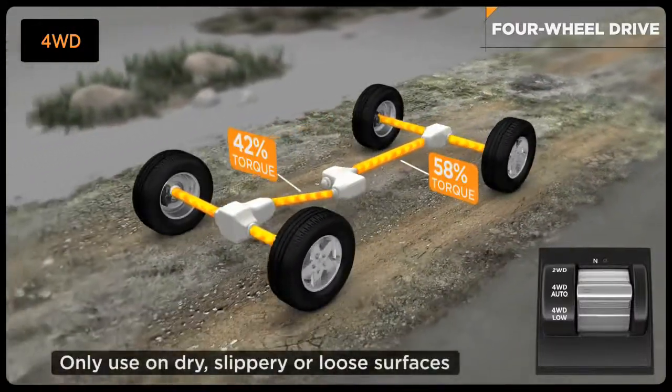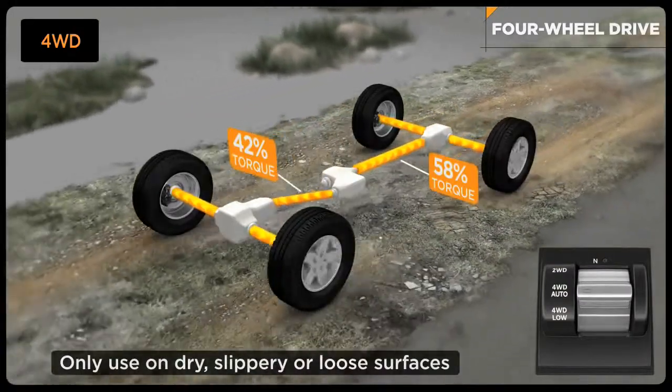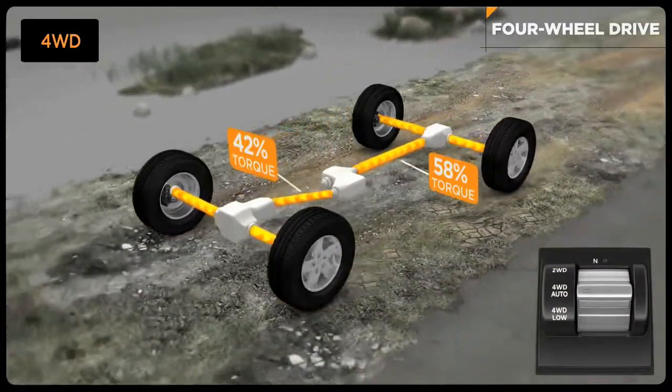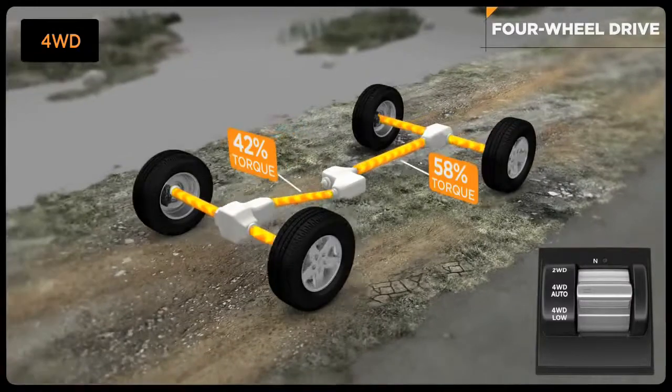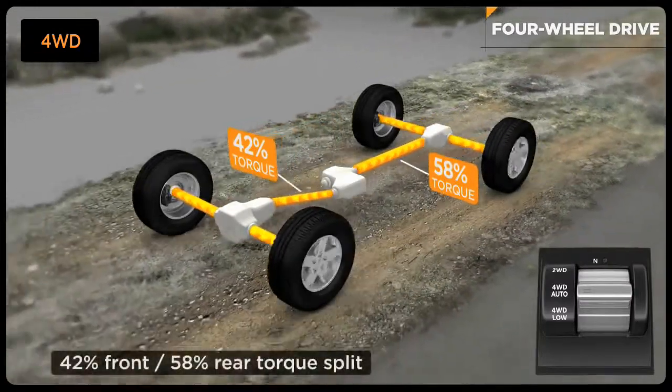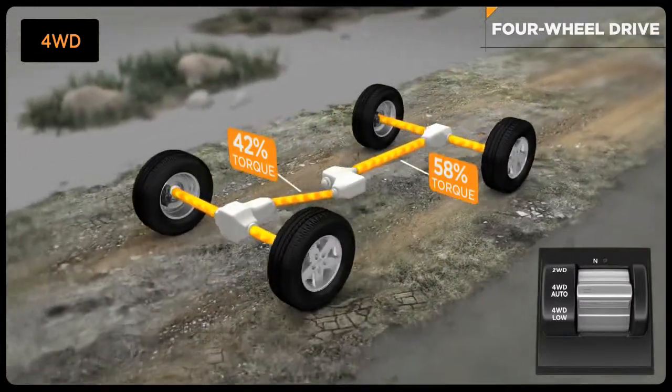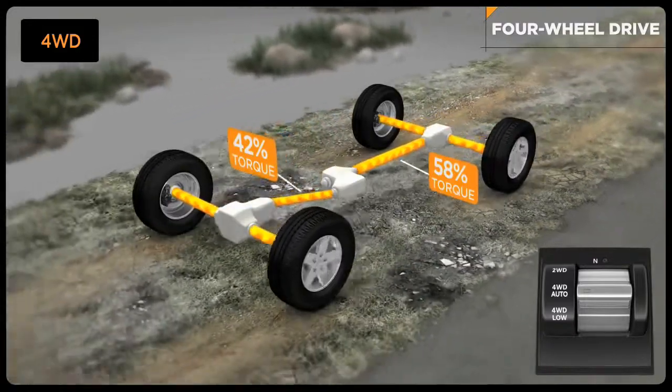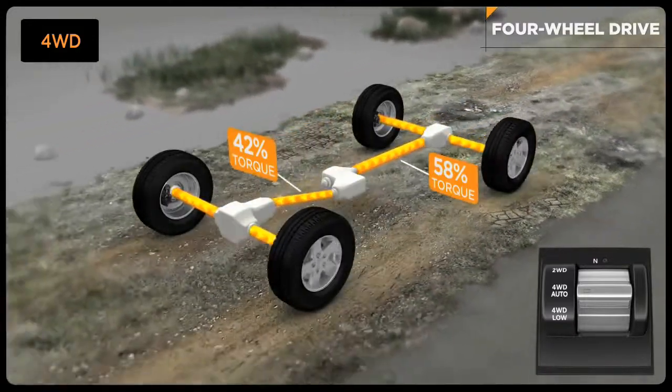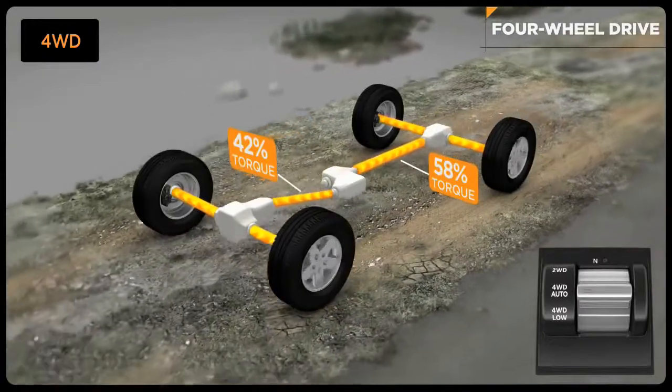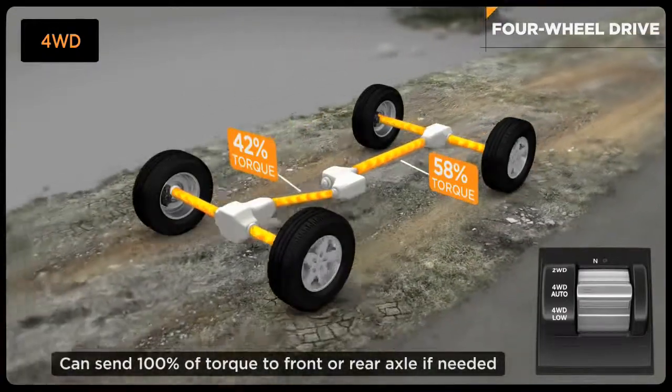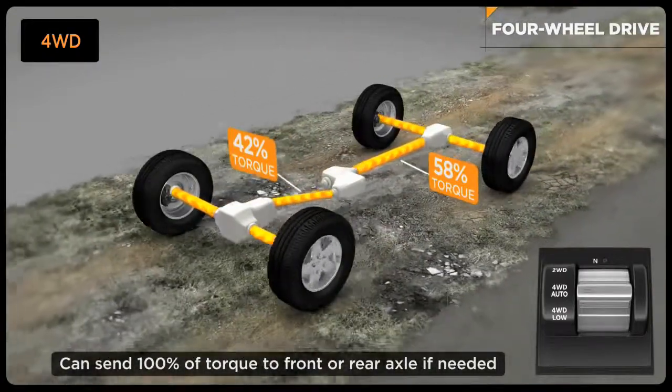This system is suitable for full-time driving including dry pavement. This position is always in four-wheel drive mode with a normal 42% front axle and 58% rear axle torque split. The system also anticipates and prevents slip by redirecting torque as necessary, up to 100% to the front or rear axle if needed.